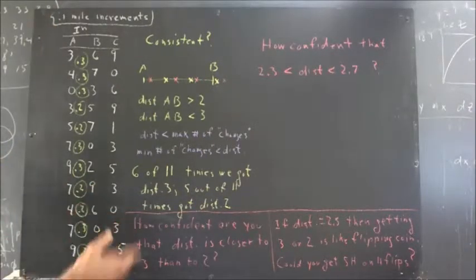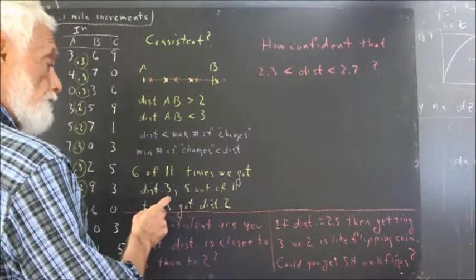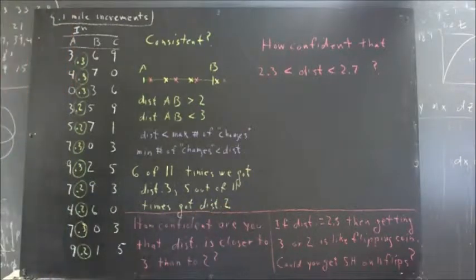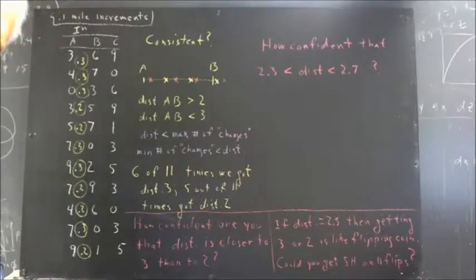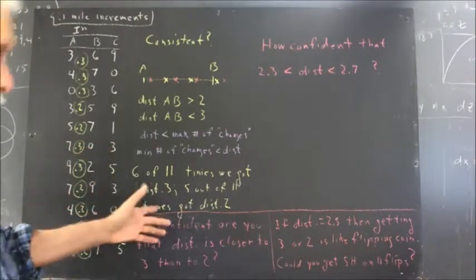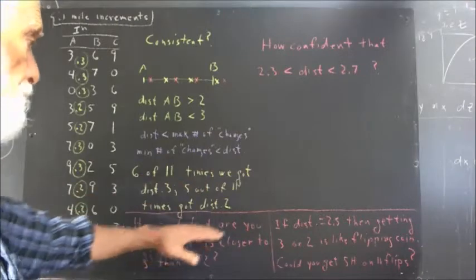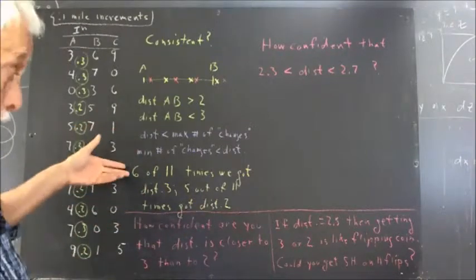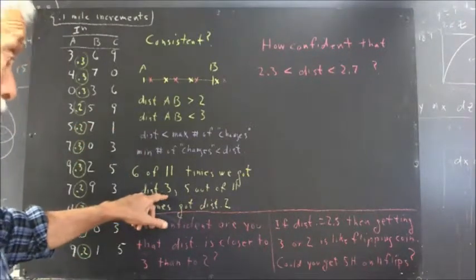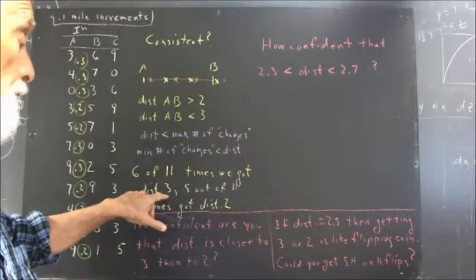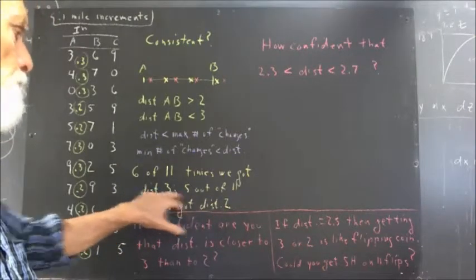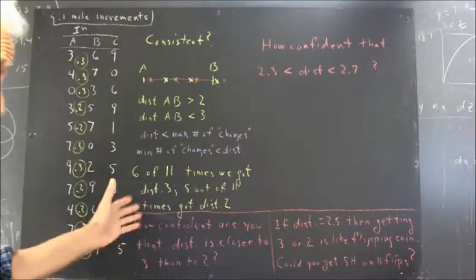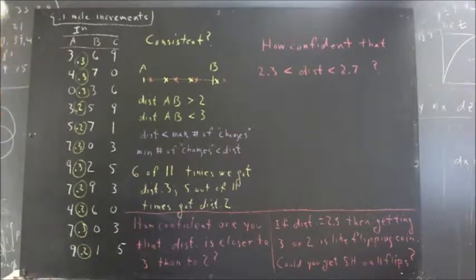If we count these, we see that six times out of eleven, we get a distance of three. Five times out of eleven, we get a distance of two. Do you think the distance is closer to three or two, based on this information? Most people would say, well, more than 50% of the time, we found a distance to be three, so we think that the distance is probably more, that three is more likely than two, which means the distance is probably more than halfway between two and three. The distance is a little more than 2.5.